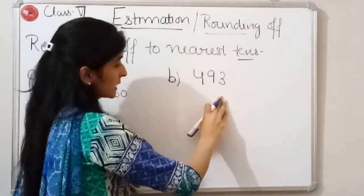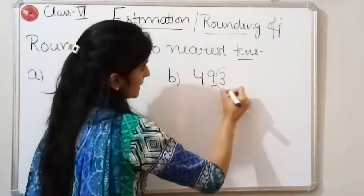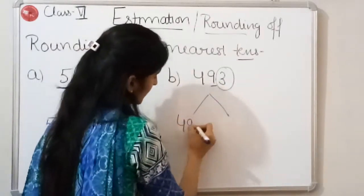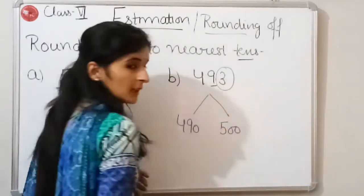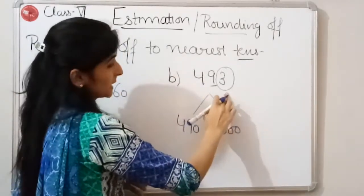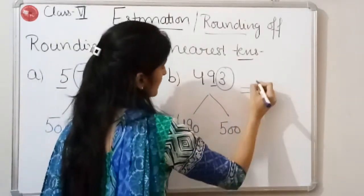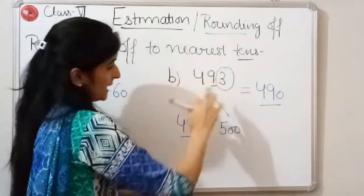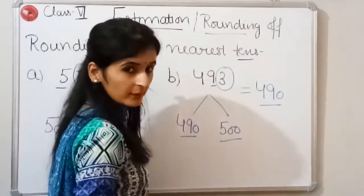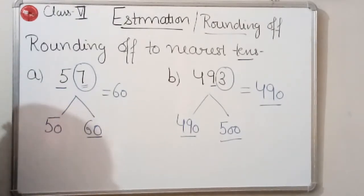For the next example, the digit on tens place is 9. We highlight the digit on its right. The number lies between 490 and 500. We compare 3 with 5 — since 3 is less than 5, it rounds off to the previous tens, which is 490. If it were greater than 5, it would round off to the next tens, which is 500.